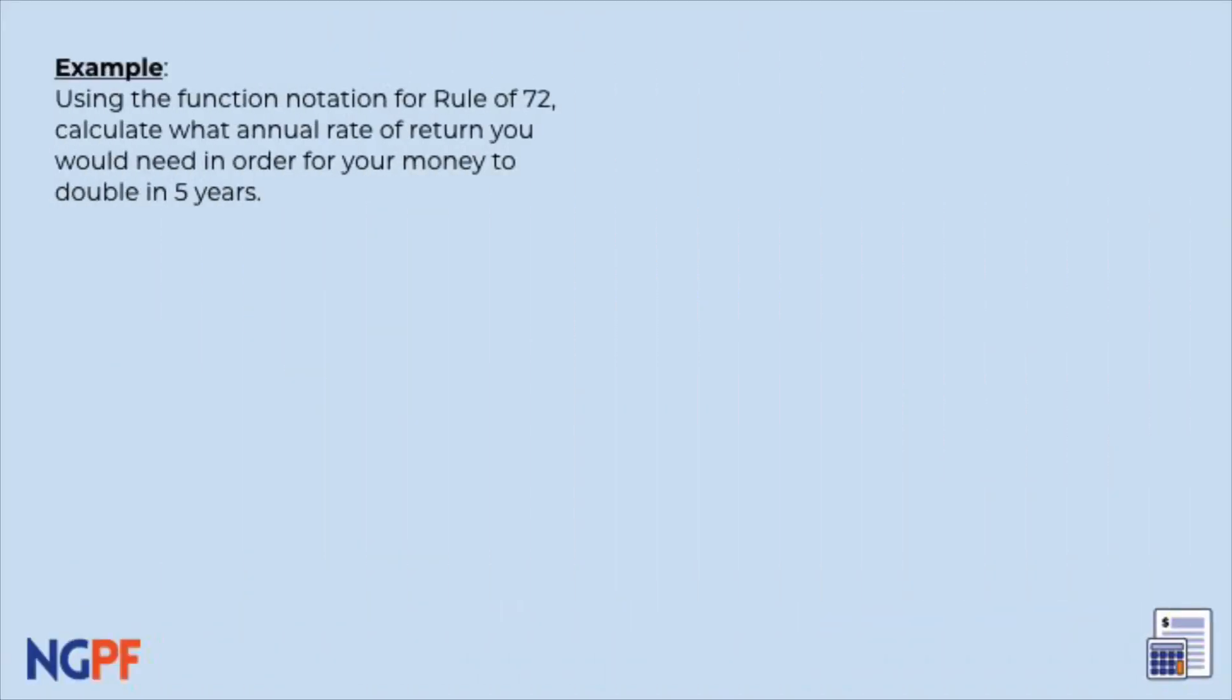Now it's your turn. Using the function notation for Rule of 72, calculate what rate of return you would need in order for your money to double in 5 years. Continue on to the practice problems in your worksheet. You got it!